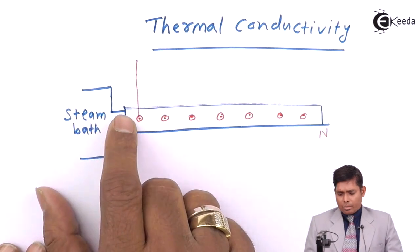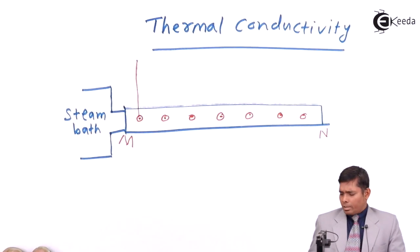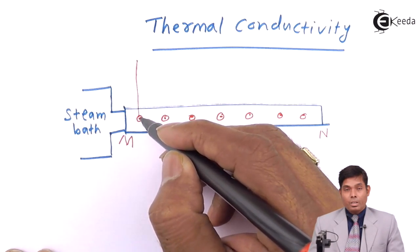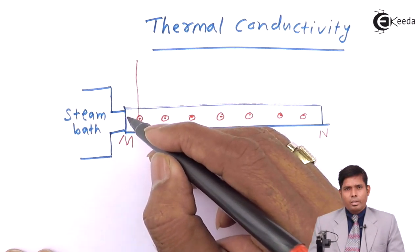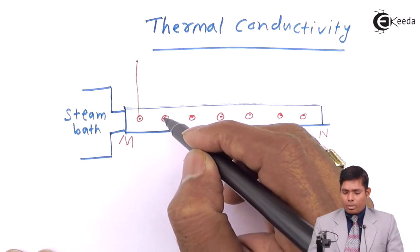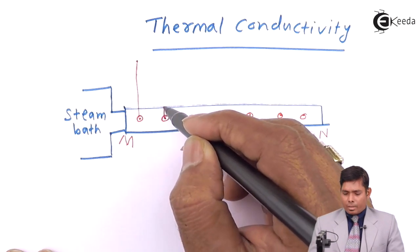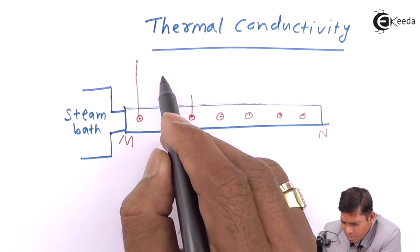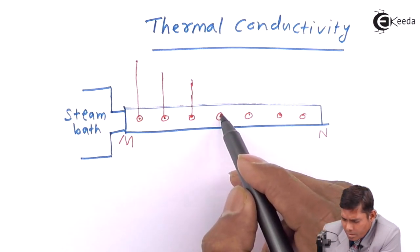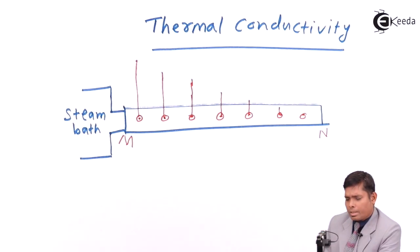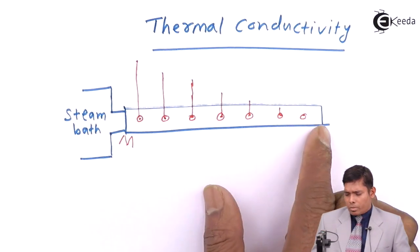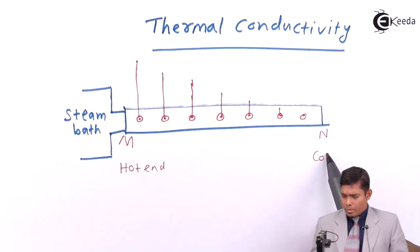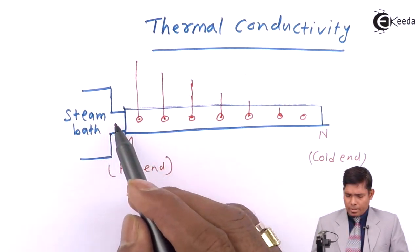Whatever temperature I am supplying here, this end will get heated up first. If you see the reading in the thermometer, the molecule very near to the hot end has a higher temperature compared to molecules lying farther apart. There is a decrease in temperature as you move away from the hot end toward the cold end.